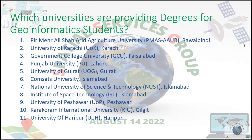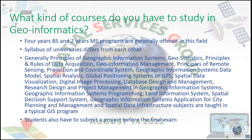University of Gujrat (UOG), Gujrat. COMSATS University, Islamabad. National University of Science and Technology (NUST), Islamabad. Institute of Space Technology (IST), Islamabad. University of Peshawar (UOP), Peshawar. Karakoram International University (KIU), Gilgit. University of Haripur (UOH), Haripur.